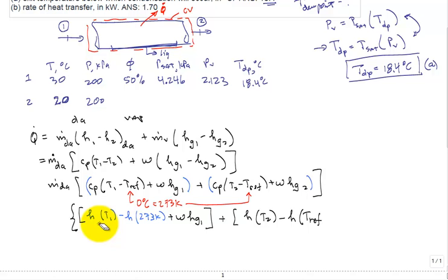I know I'm botching this a little bit, get rid of that subscript right there. And that T reference is 273 Kelvin, or zero degrees C, plus omega times H G two, close, like that. It's very common.